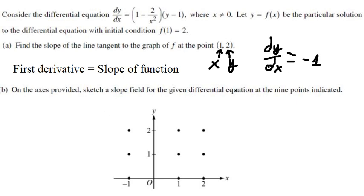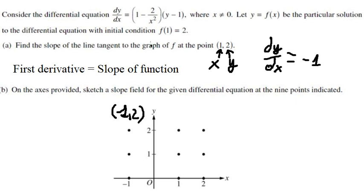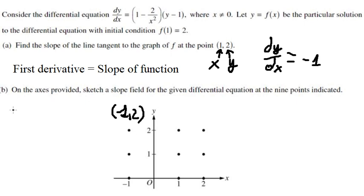Question number 2. We want to sketch a slope field with only nine points. For the first point we can see that this one is about negative 1, positive 2. So we put negative 1 and 2 here, and we have dy over dx equals to negative 2.